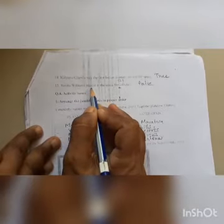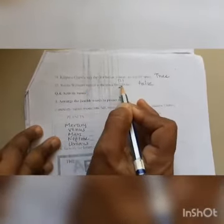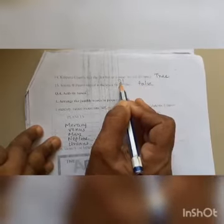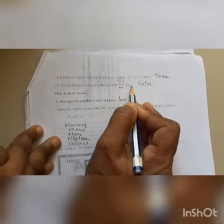Sunita William stayed in the space for two forty days. So this is false. Not two forty days, she stayed for one hundred and twenty one days.